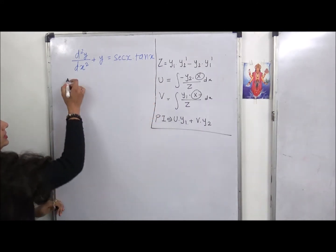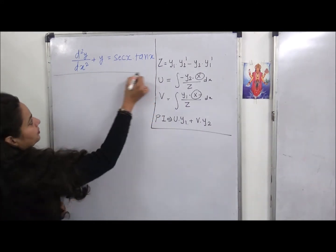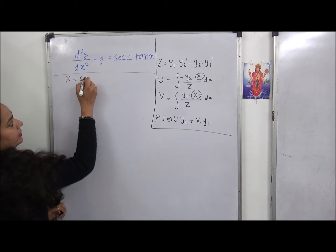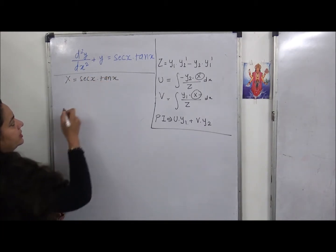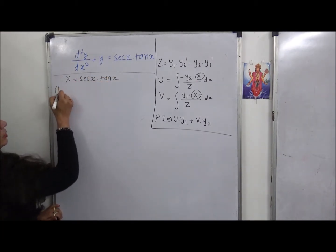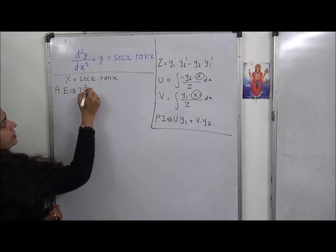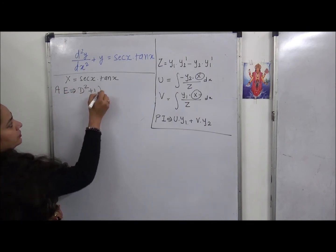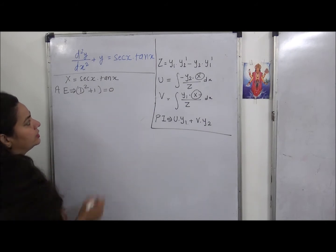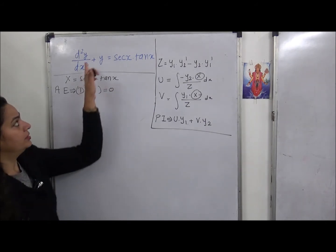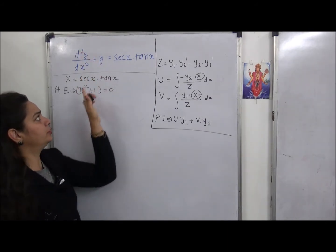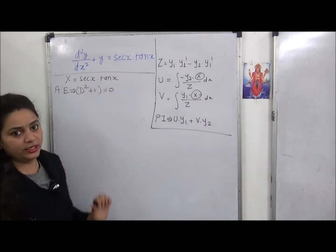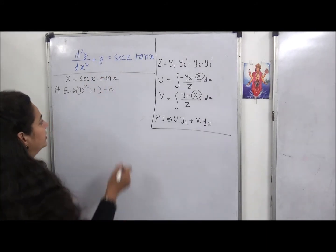Now how do we solve this? First, the right-hand side is sec x · tan x. We need to find the auxiliary equation: D² + 1 = 0. We write d²y/dx² as D², and since there is no derivative term the constant is 1.